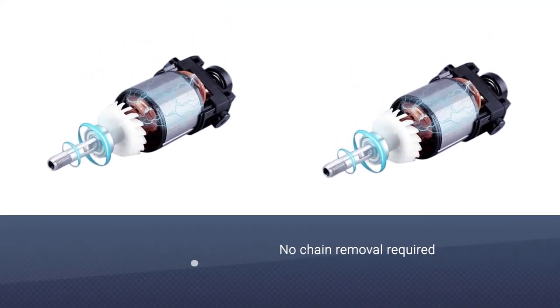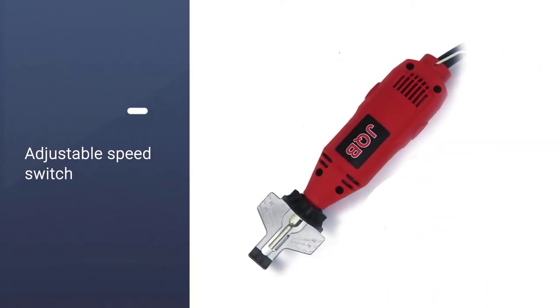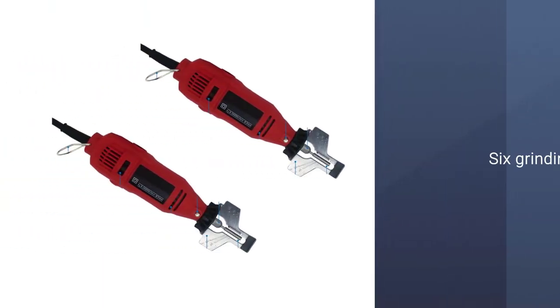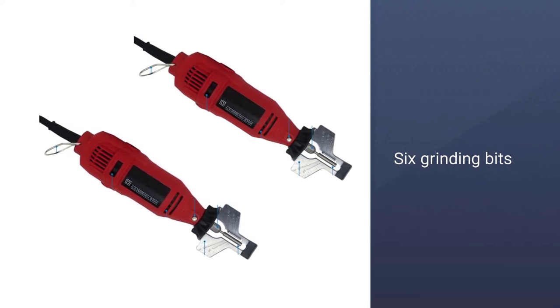This sharpener has an adjustable speed dial with a maximum speed of 30,000 revolutions per minute and comes with six grinding bits, three pink grinding stone bits and three diamond grinding bits. The Mata is a useful tool for small sharpening tasks.